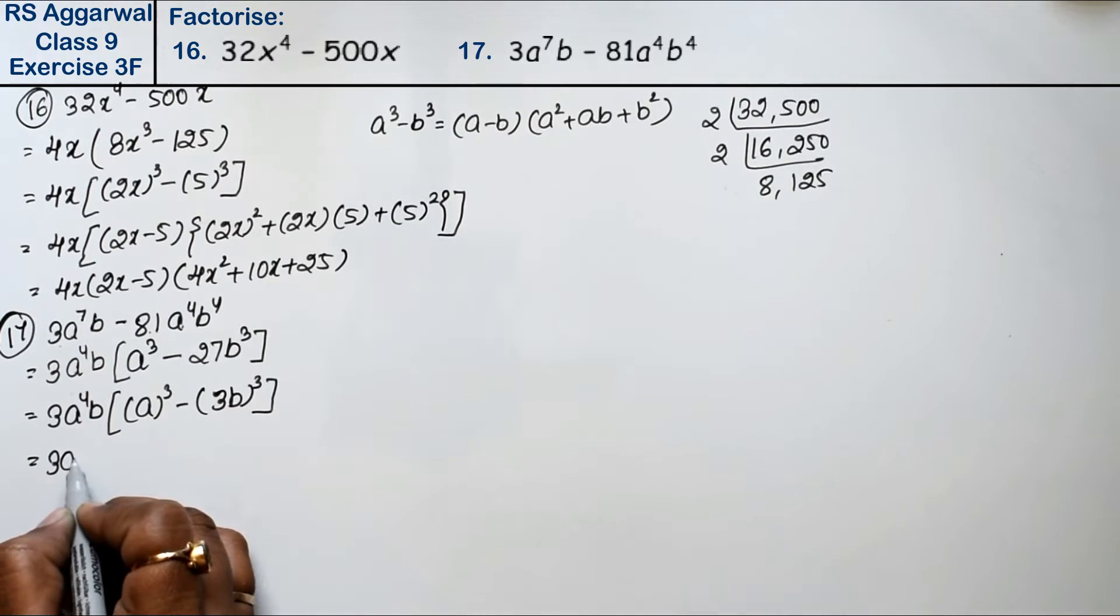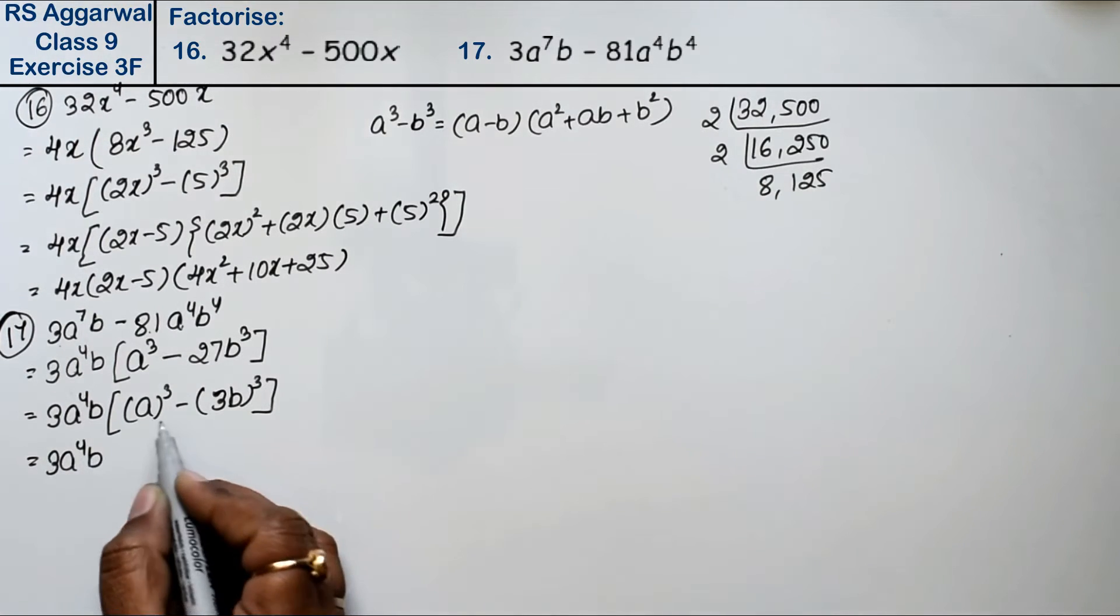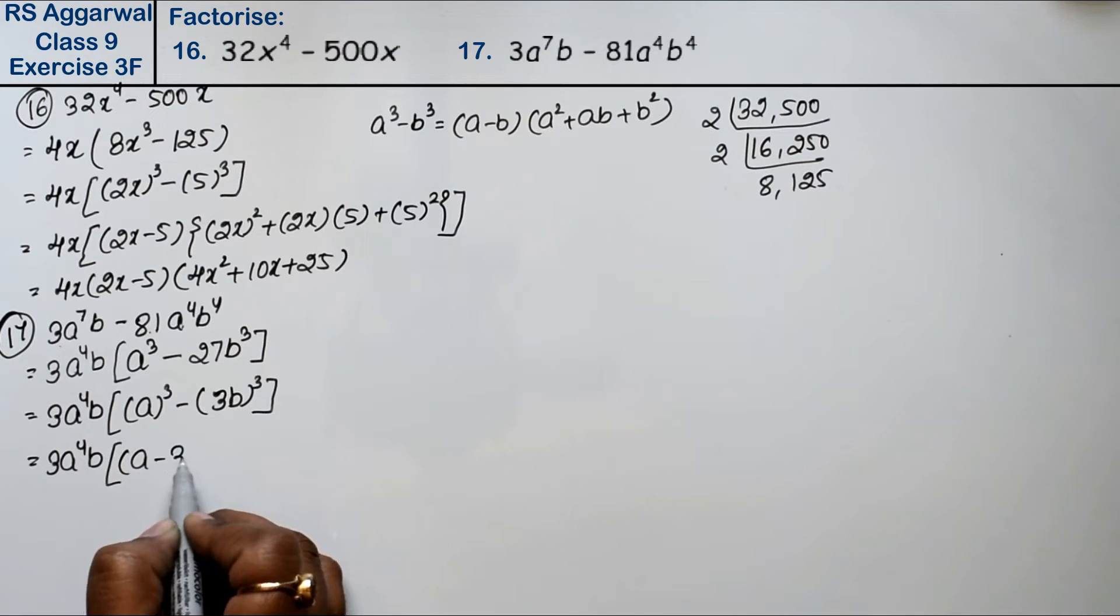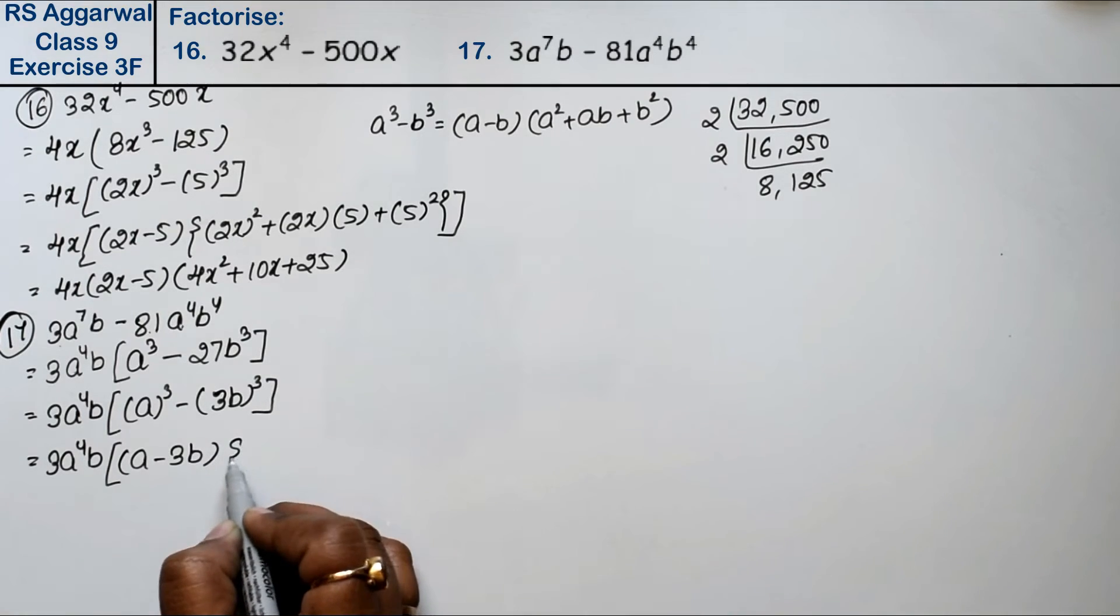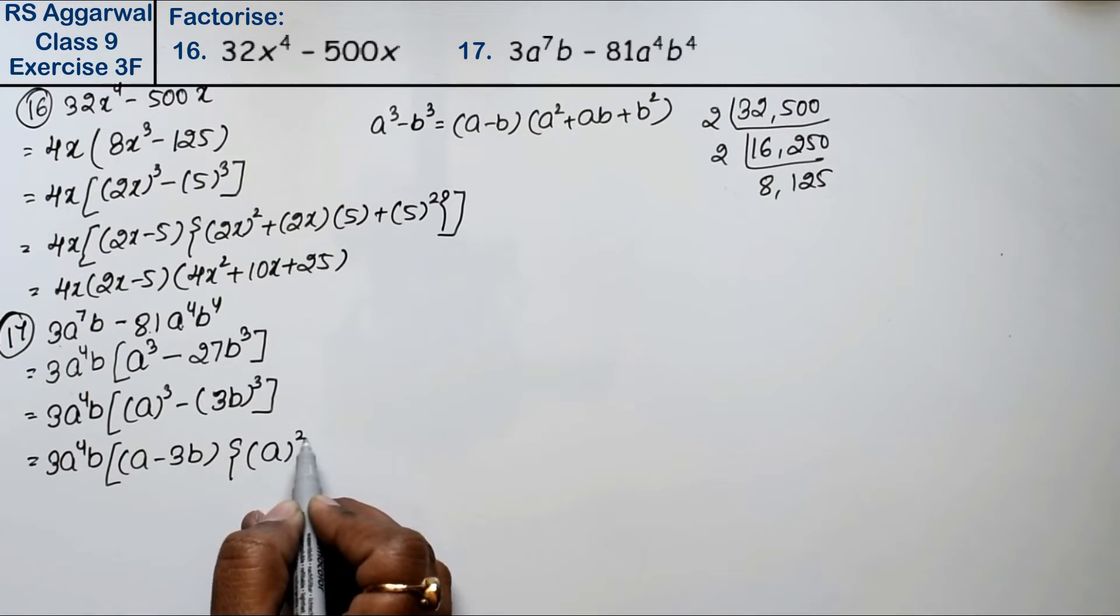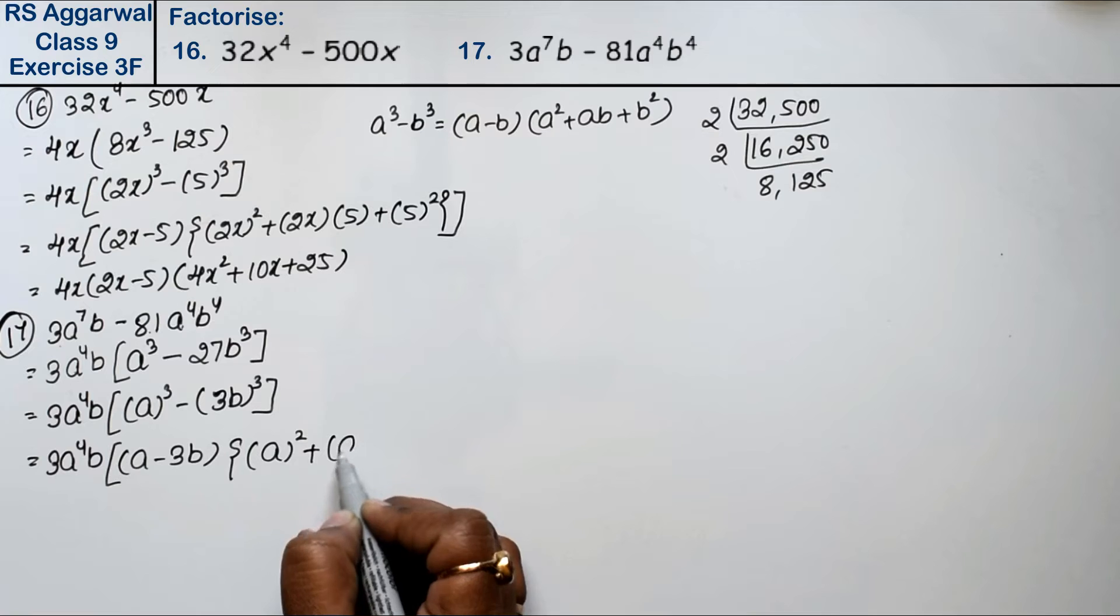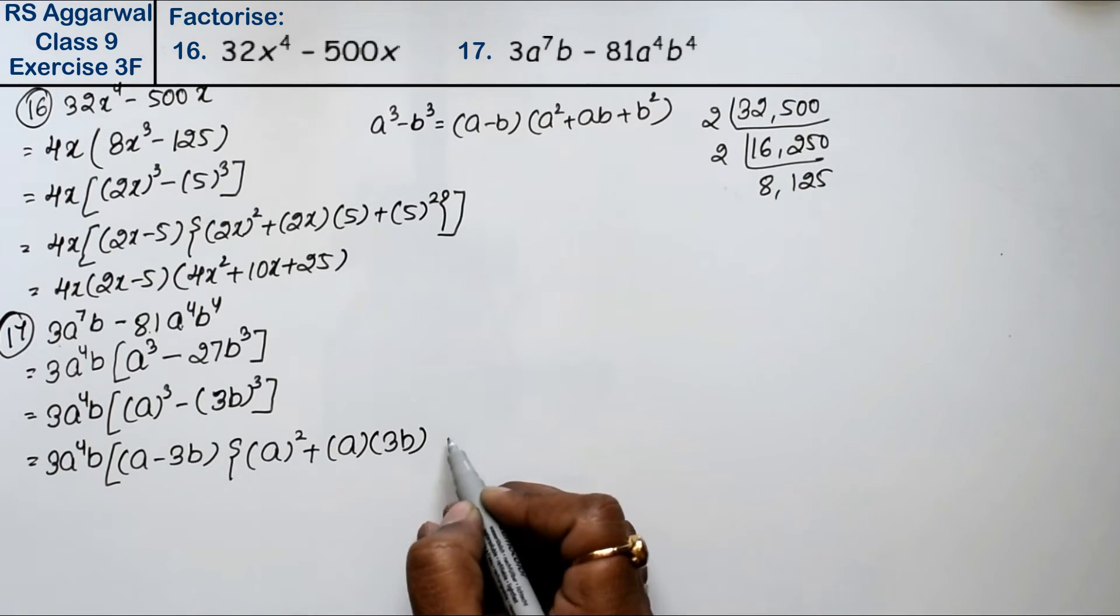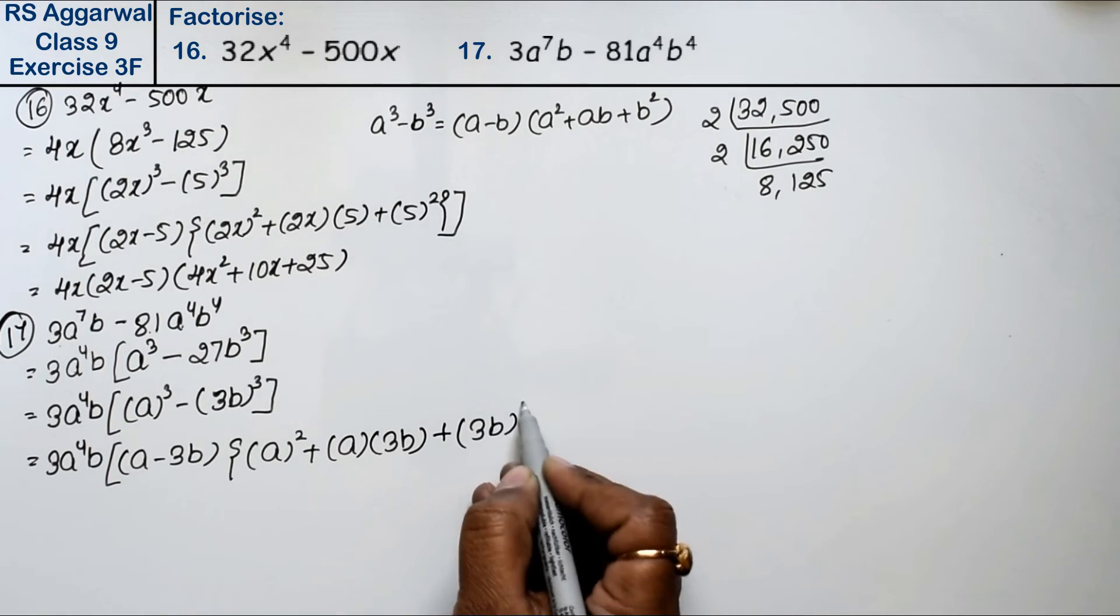So 3a^4b, and a³ minus b³ formula applies. We write (a - 3b), a², plus a times 3b. In place of a we write a, in place of b we write 3b, plus b² which is (3b)².